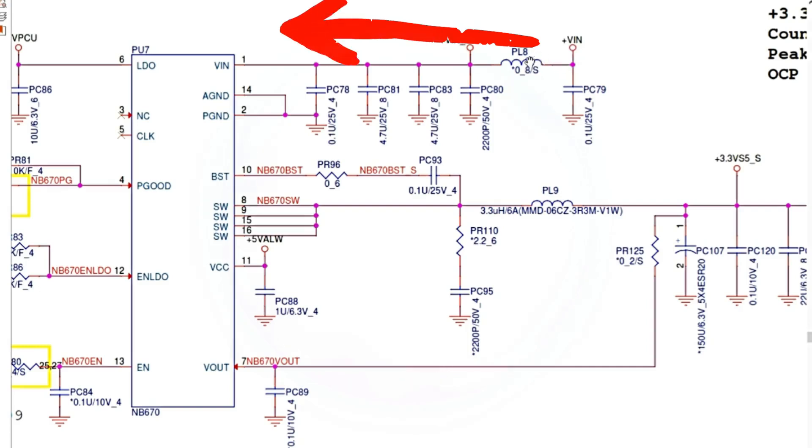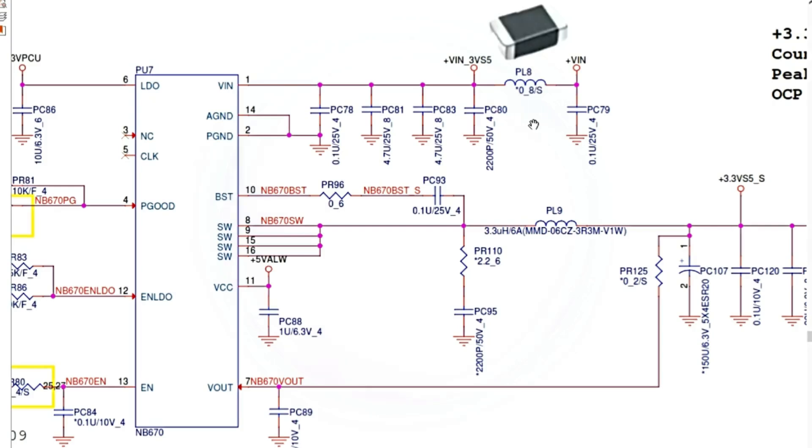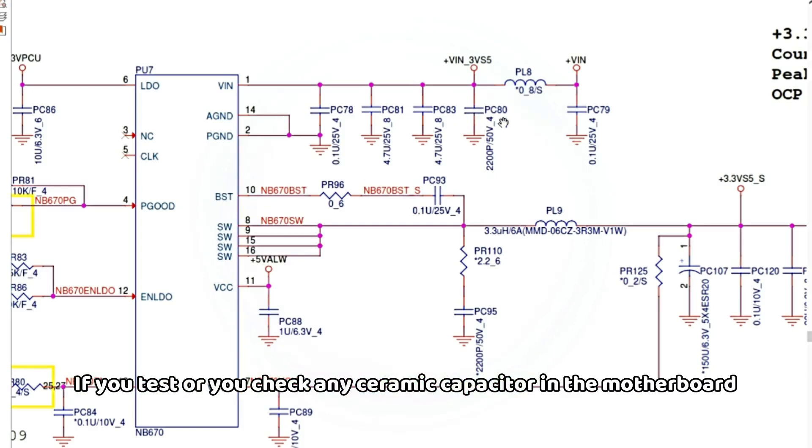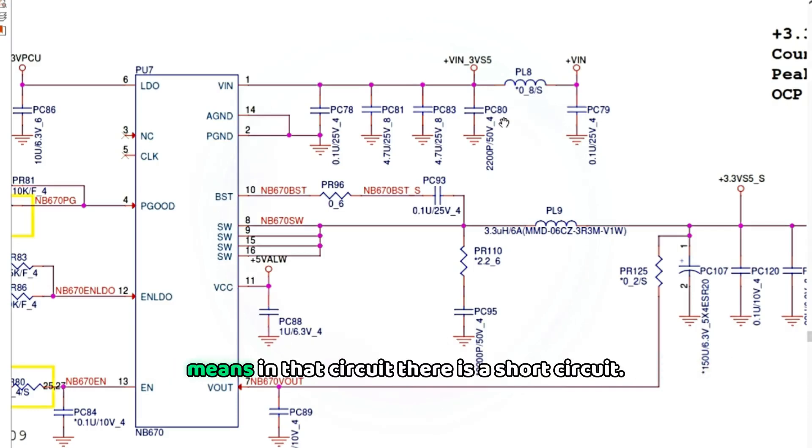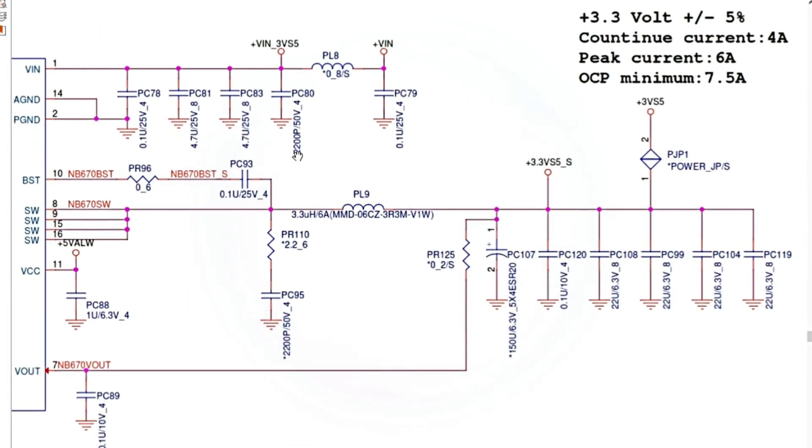The 19 volts will pass through this inductor. As I told you before, this inductor has, as a purpose, to increase the current and then pass through the ceramic capacitors. Usually, ceramic capacitors are connected in one side to the power rail - to the VIN on 19 volts power rail, and in the other side to the ground. And that's why you should never get a short on a capacitor. If you test or you check any ceramic capacitor in the motherboard, and you get a short or a low resistance or continuity or a buzzer, it means in that circuit, there is a short circuit. Maybe it can be the capacitors itself, the IC, the chemical capacitor, and so on.